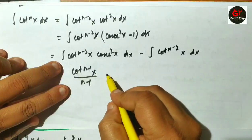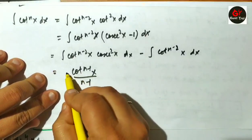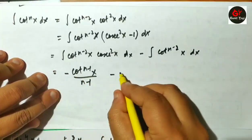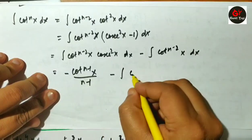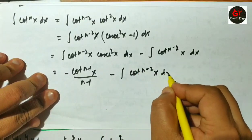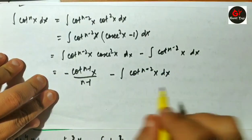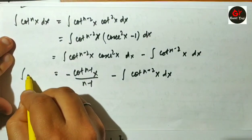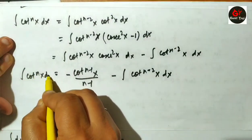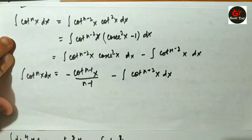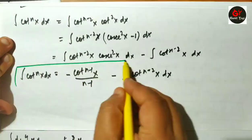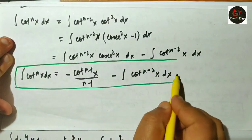And with a negative sign, of course — we write minus integral of cot to the power (n-2)(x) dx. So this is my reduction formula for cot to the power n(x) dx.